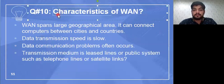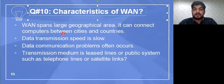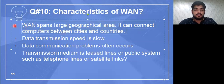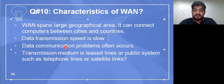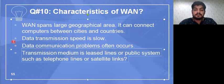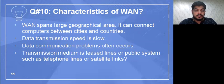The last question covers the characteristics of a wide area network. A wide area network spreads over a large geographical area and connects computers between cities and countries. Data transmission speed is slow and data communication problems often occur. The transmission medium consists of leased lines or public systems such as telephone lines or satellite links.